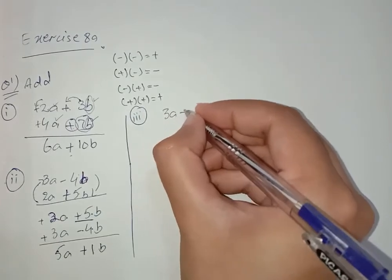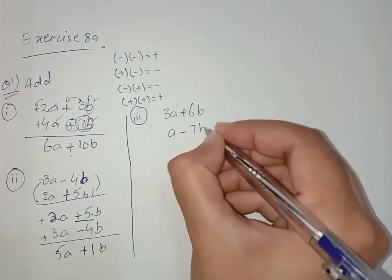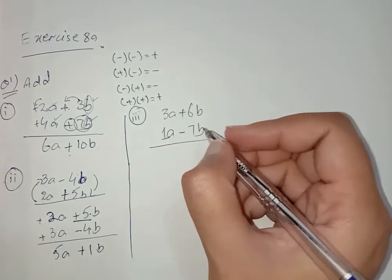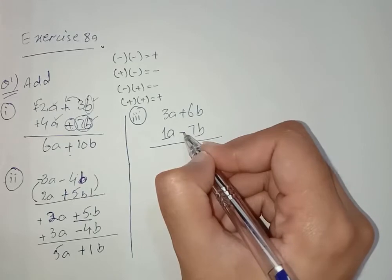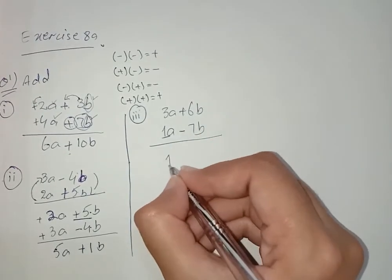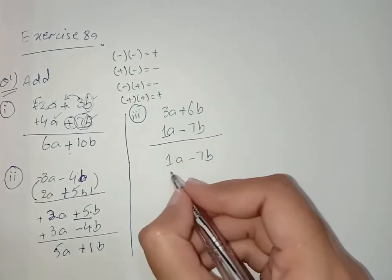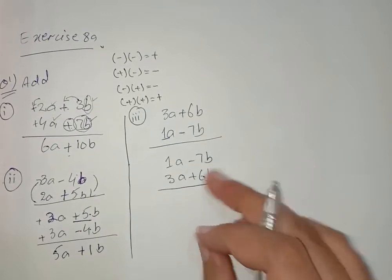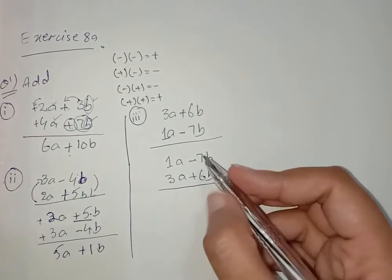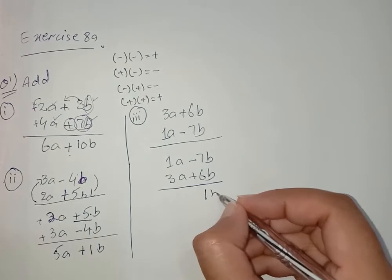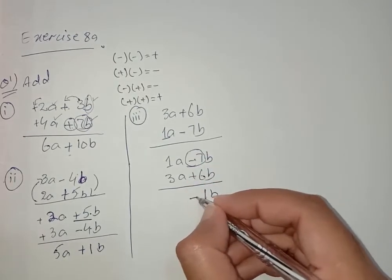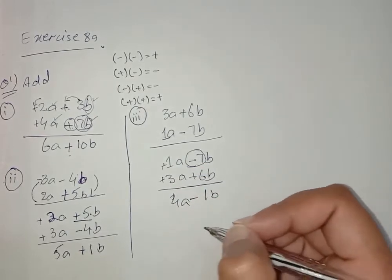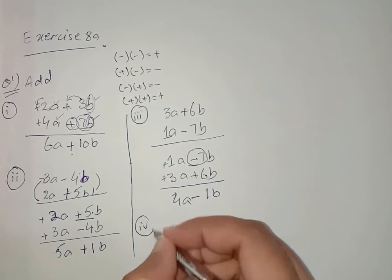Now move towards Part 3, which is 3a plus 6b and a minus 7b. There is no number with a, so we write 1a. Plus minus is also minus, so we can rearrange: 1a minus 7b on top and 3a plus 6b below. Plus minus is minus, so 7 minus 6 is 1b — the sign of the bigger value is minus. Plus plus is plus, so 1 plus 3 is 4a. The answer is 4a minus 1b.